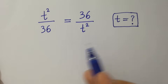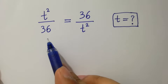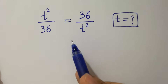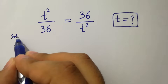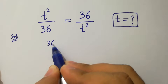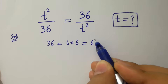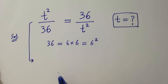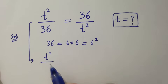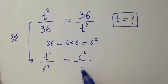Hello friends, find the value of t if t square over 36 equal to 36 over t square. Let's have a solution. Since 36 equal to 6 times 6 equal to 6 square, then it will be t square over 6 square equal to 6 square over t square.